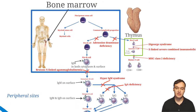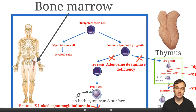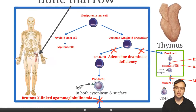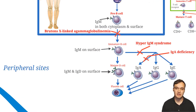That mutation causes the Bruton tyrosine kinase not to work, stopping maturation at the pre-B cell stage. In the bone marrow, a pluripotent stem cell gives rise to myeloid stem cells or common lymphoid progenitor cells. These can give rise to B or T cells. The B cell sequence is: pro-B cell → pre-B cell → immature B cell → mature B cell → plasma cell. In Bruton's, the maturation is blocked here, so we have a lot of pre-B cells but none of the subsequent cells.